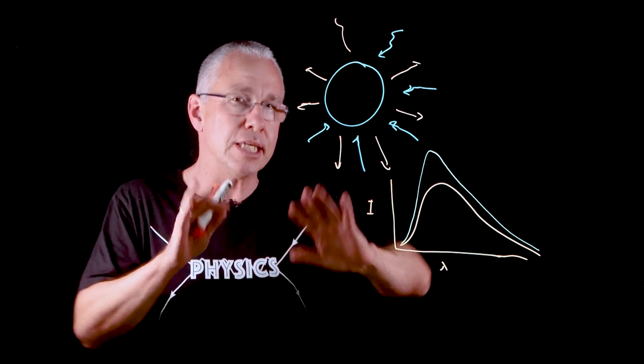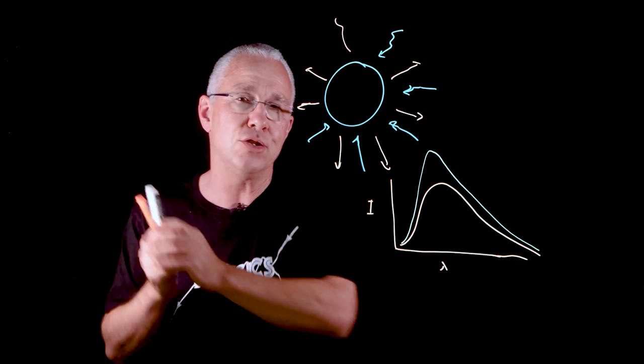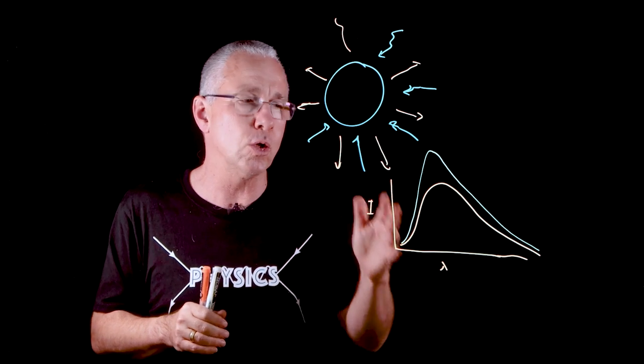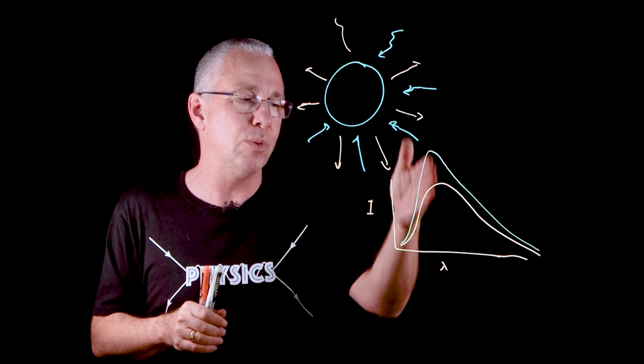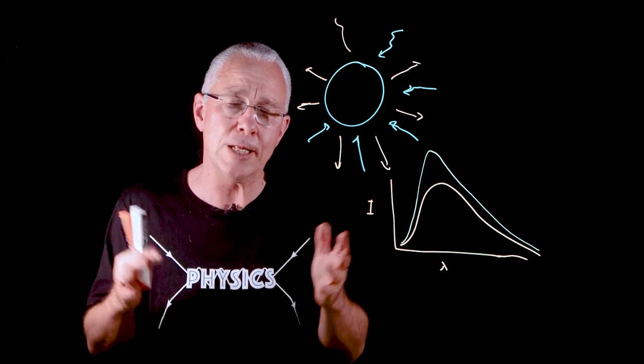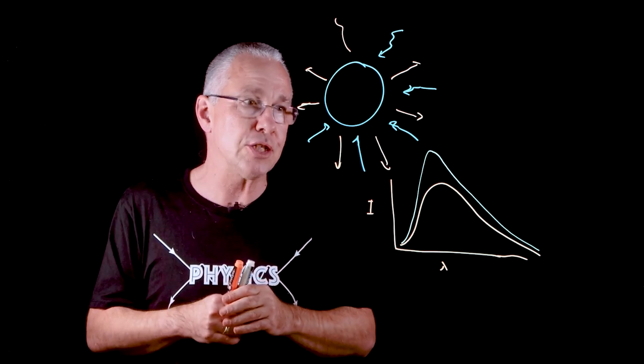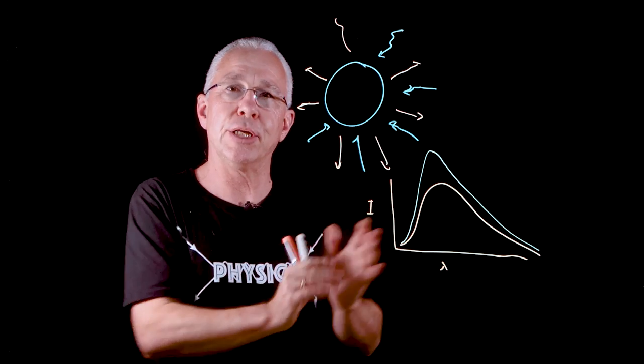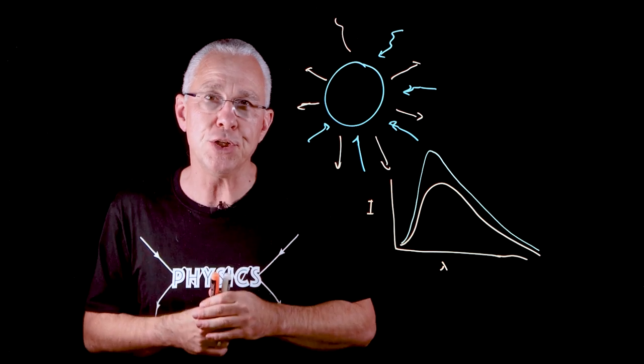There's much more to that, and I encourage you to look at my videos where we look at Max Planck, and we also look at Wien's law, which looks at the link between the wavelength that has maximum intensity and the temperature as well. But that's a much bigger discussion. But that is in essence the black body radiation and the black body curve that is associated with it. Hope that helps you.